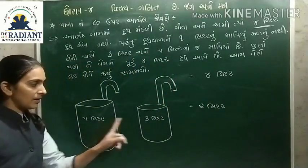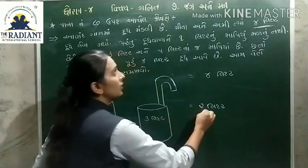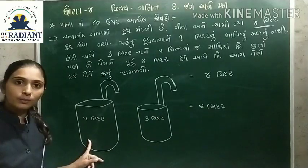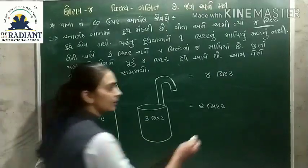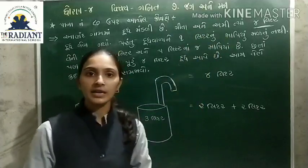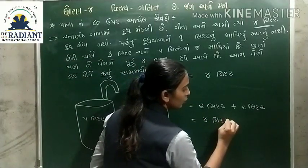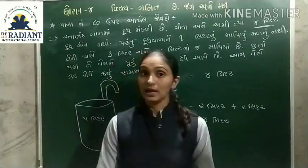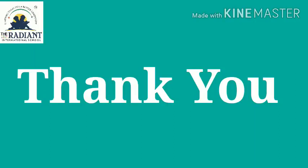થોડો વિચાર કરીએ. 5 લિટરના માપ્યામાંથી 3 લિટર ઠાલવ્યું, તો 5 – 3 = 2 લિટર બચ્યું. એ 2 લિટર ગીતાને આપ્યું. ફરી 5 લિટર ભર્યું અને 3 ઠાલવ્યું, બાકી 2 લિટર અમીને આપ્યું. આ રીતે બે વખત 2-2 લિટર આપ્યું, કુલ 4 લિટર દૂધ બન્ને ને મળ્યું.